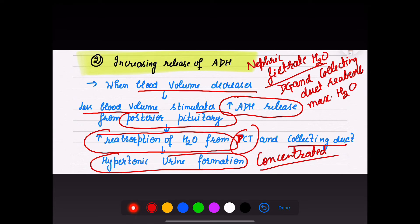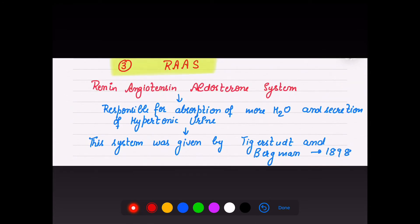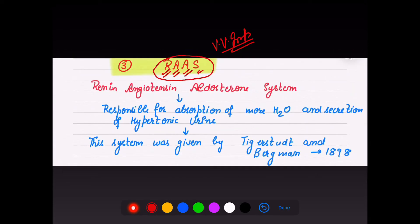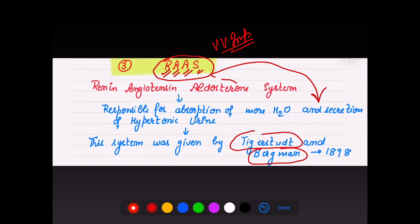The third mechanism for absorption of more water is the RAS — Renin-Angiotensin-Aldosterone System. This is a very important system. ADH helps the DCT and collecting duct; RAS is responsible for absorption of more water and secretion of hypertonic urine. This system was described by scientists Tigerstedt and Bergman in 1898.